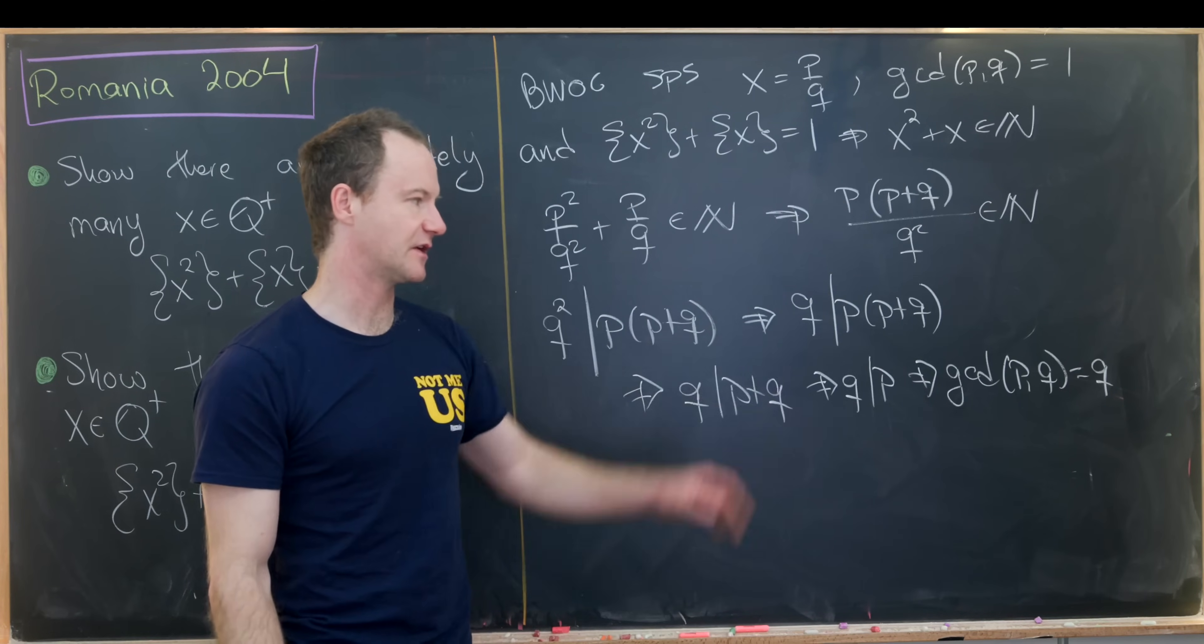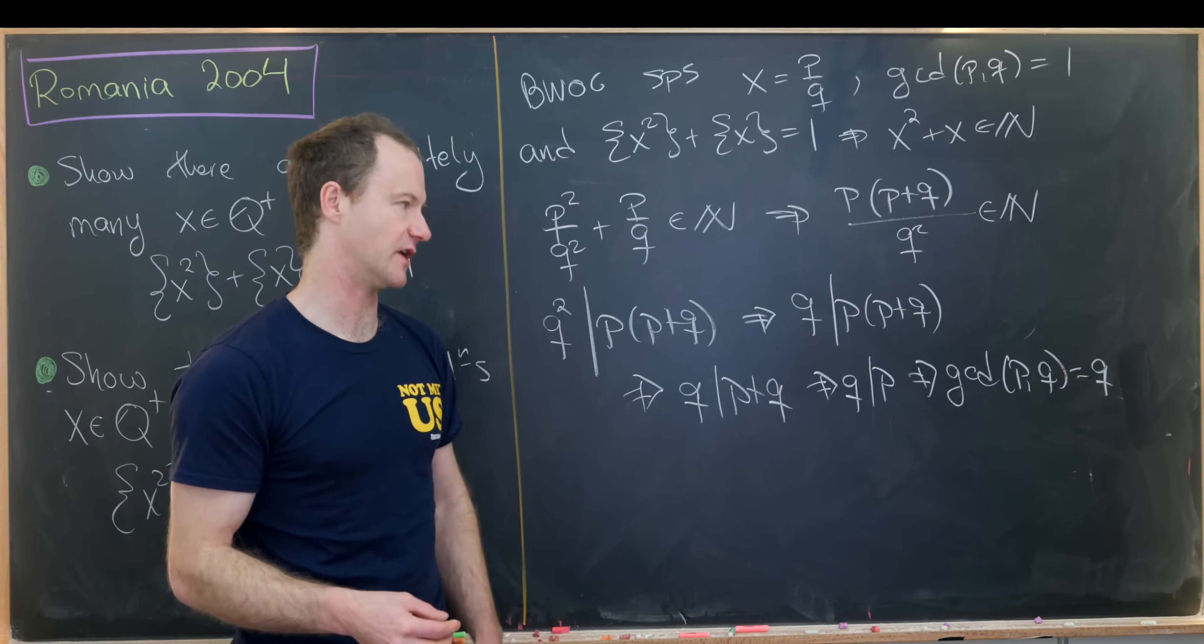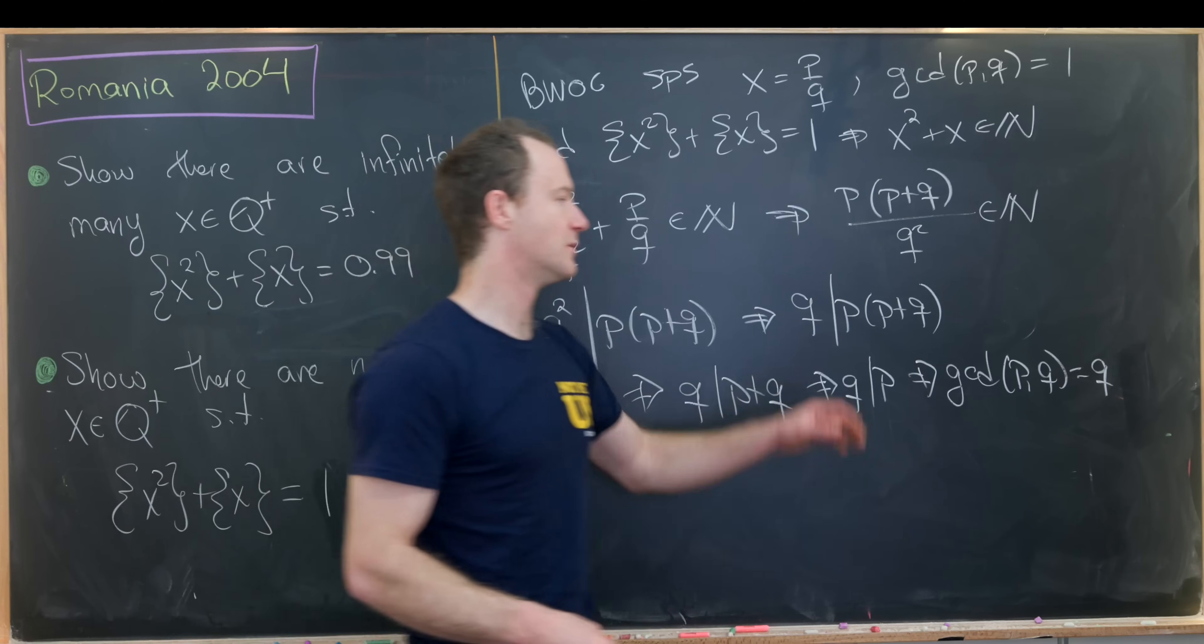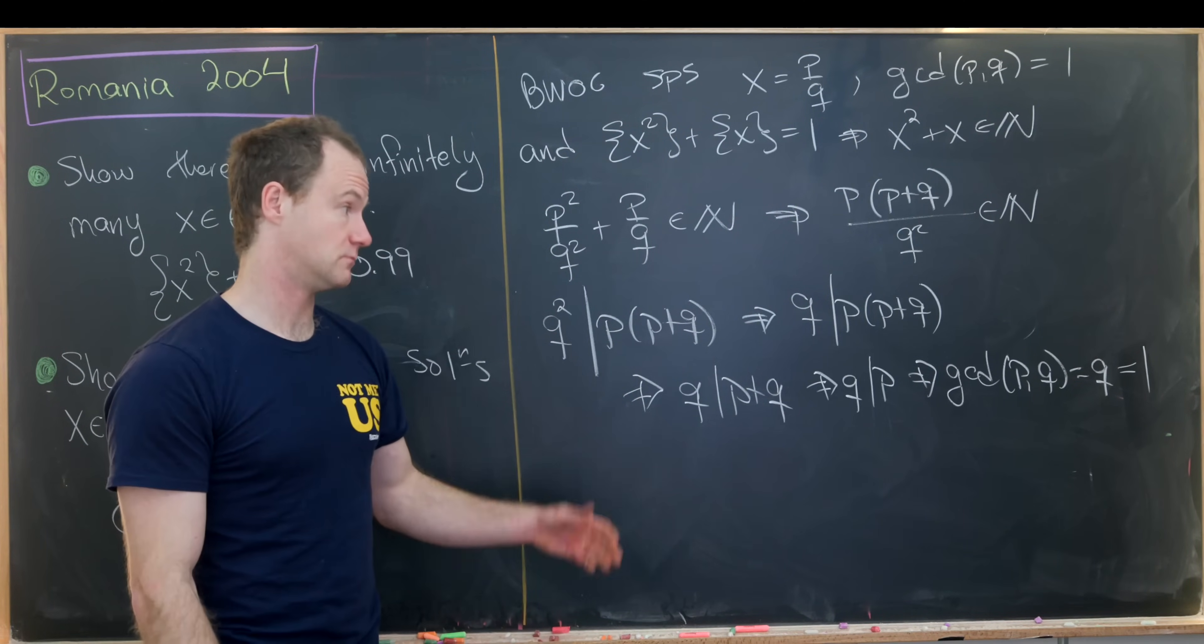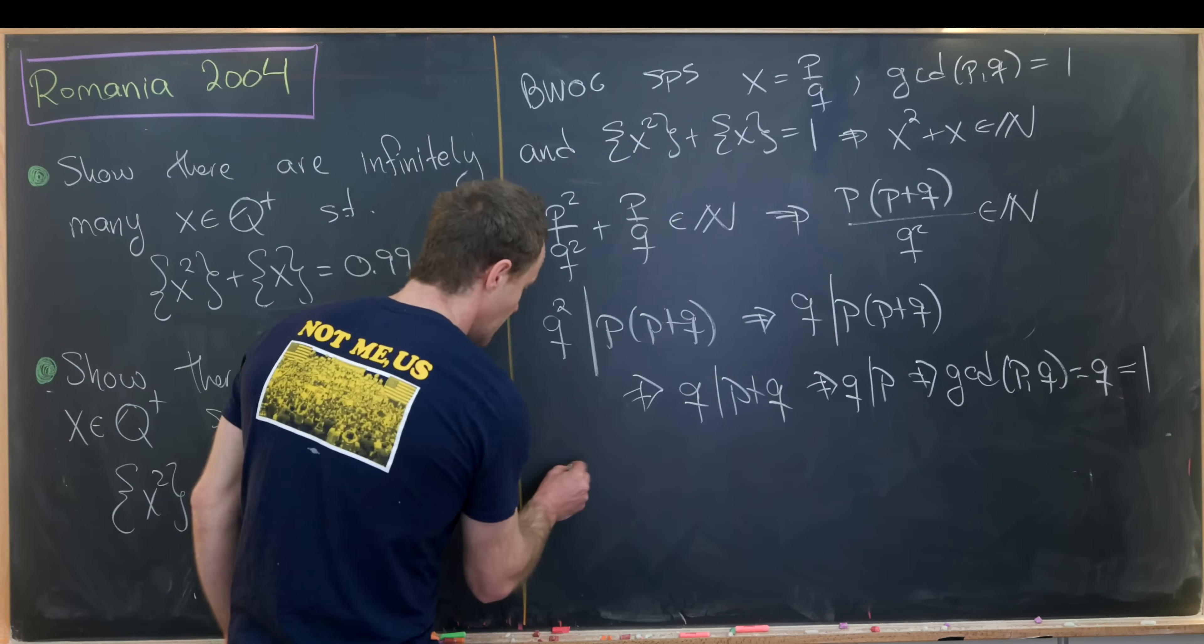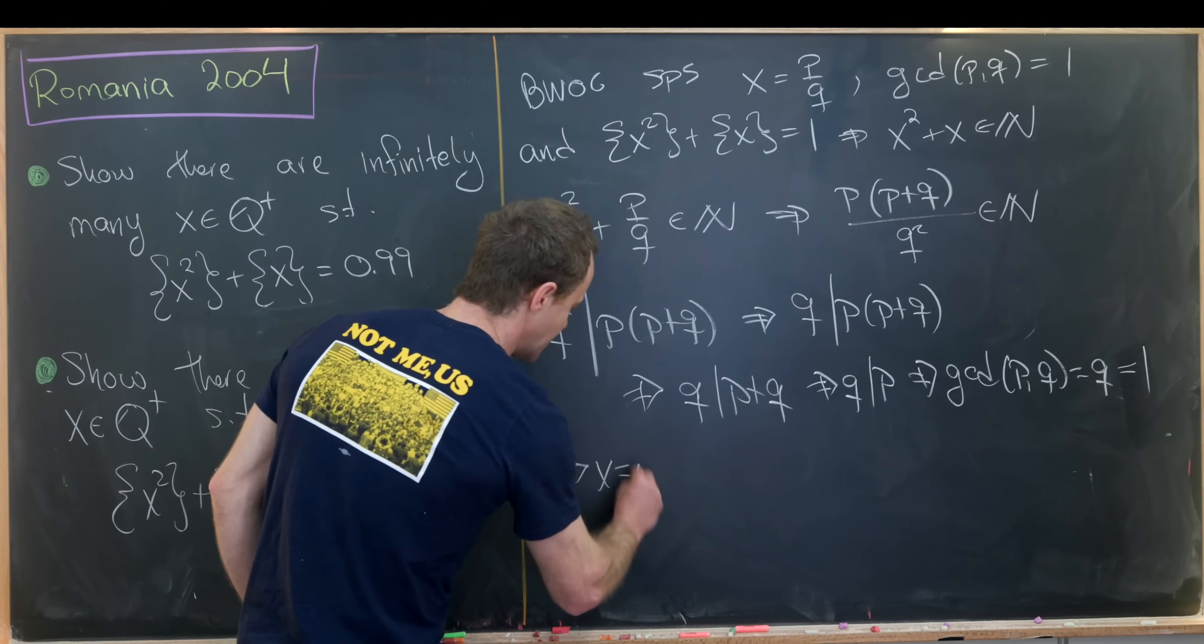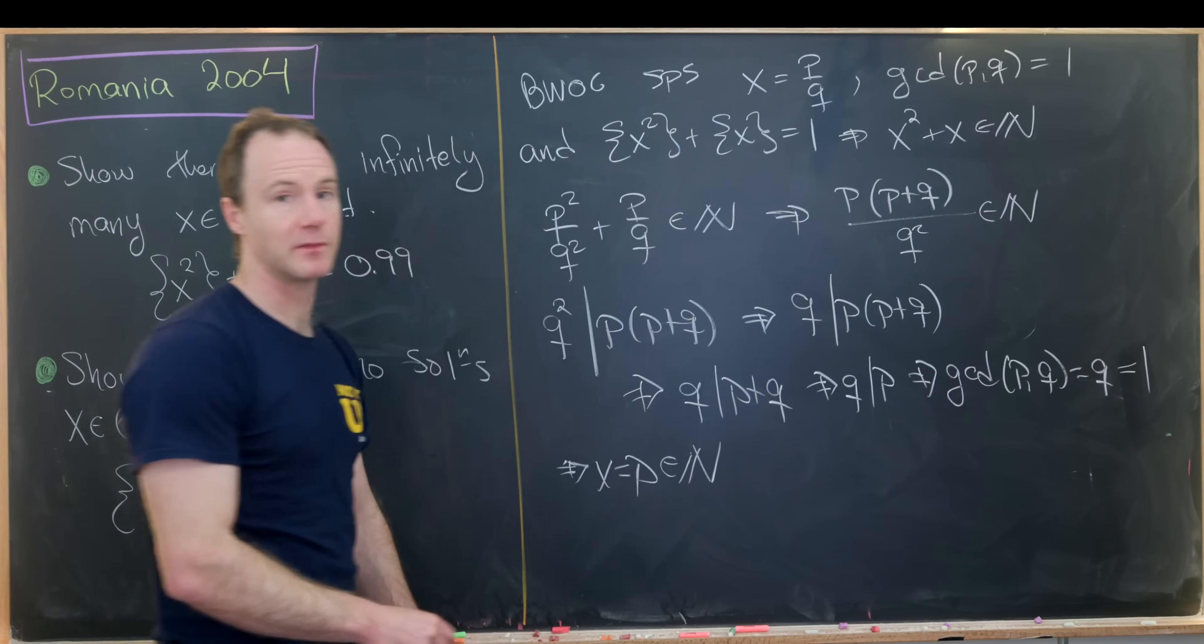So that divisibility relationship implies that greatest common divisor relationship, but we assume that gcd to be equal to one. So we've got q is equal to one, which means x is equal to p, which is a natural number.